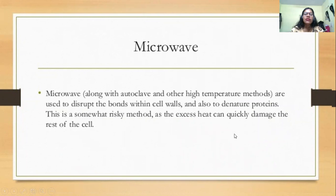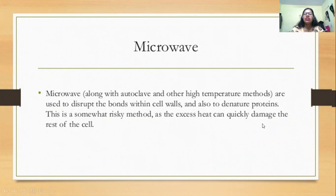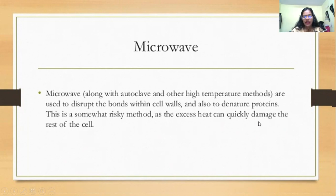Microwave or thermolysis uses higher temperatures to disrupt bonds within the cell walls. The problem with this method is that it will denature the protein. So if you are interested in working with proteins, you cannot use microwave methods. However, for DNA, RNA, or metabolites where temperature does not affect the target as much, these methods can be used.